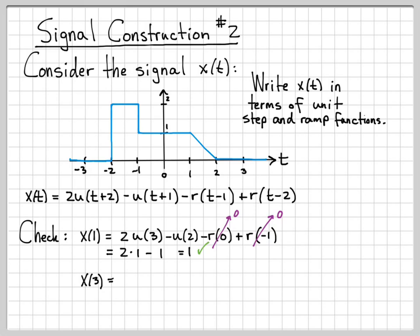Just for completeness, let's go ahead and check another point. Let's let t equals three. So we'll have 2u(5) - u(4) - r(2) + r(1). So this will be two times one minus one minus two plus one. If you add all that up, you do indeed get zero, which is what we should see out here for our signal at time three from the figure.